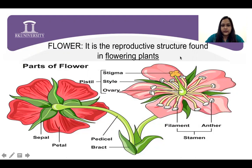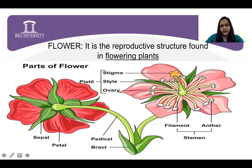As in your 11th standard, you have studied different parts of the flower, like there is a thread, there is a pellicle, there are sepals and petals. Likewise, the innermost whorl bearing the androecium and the gynoecium.